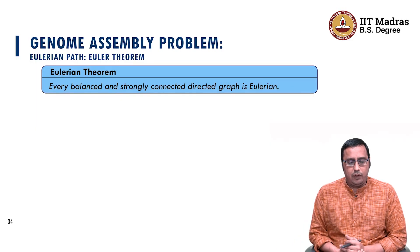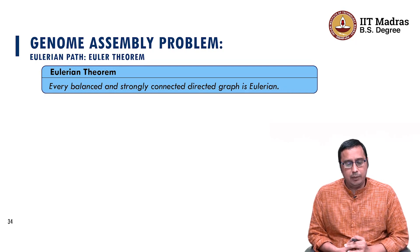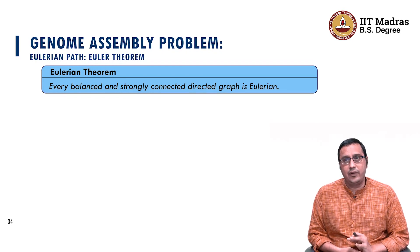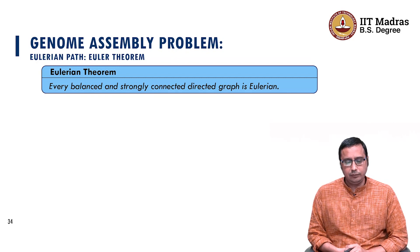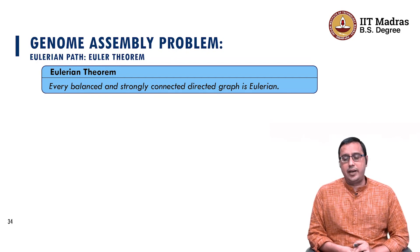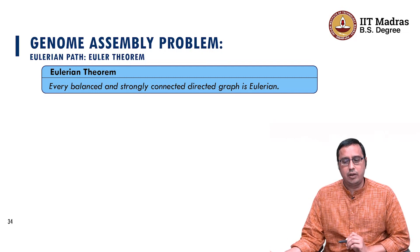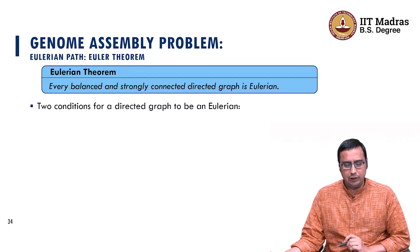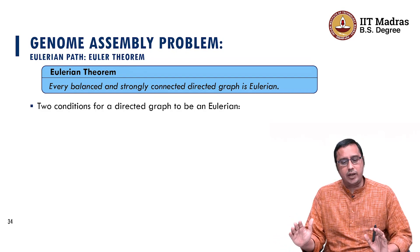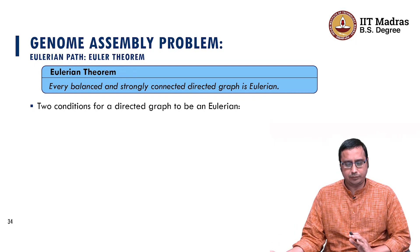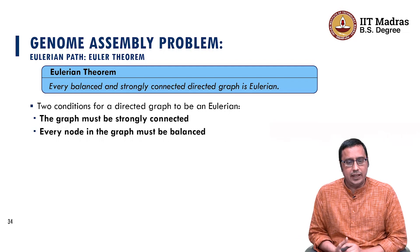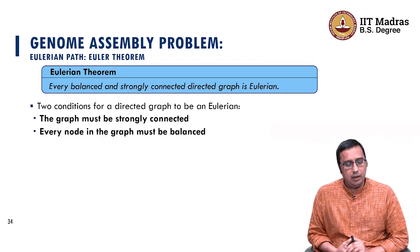Euler has actually provided a theorem which tells us when a given graph is Eulerian. Every balanced and strongly connected directed graph is Eulerian — that is the Eulerian theorem. There are two conditions for a directed graph to be Eulerian: the graph must be strongly connected, and every node in the graph must be balanced.